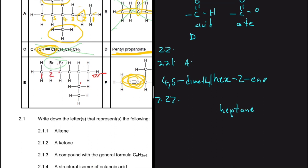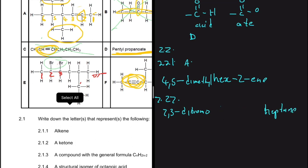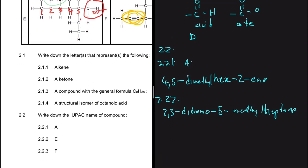Counting from the left: carbons 1, 2, 3 — on carbons 2 and 3 we have two halogens (bromine), so we write '2,3-dibromo'. Continuing: carbon 4, carbon 5 — on carbon 5 we have a methyl group, giving '5-methyl'. The full IUPAC name is 2,3-dibromo-5-methylheptane.